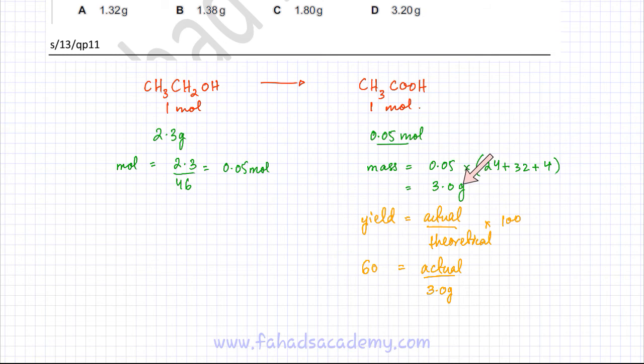So in theory you're getting 3 grams. I've put the theoretical value in the formula and I'm going to multiply by 100 and make the actual value the subject of the equation. This would give me: 60 over 100 times 3, which equals 1.80 grams.